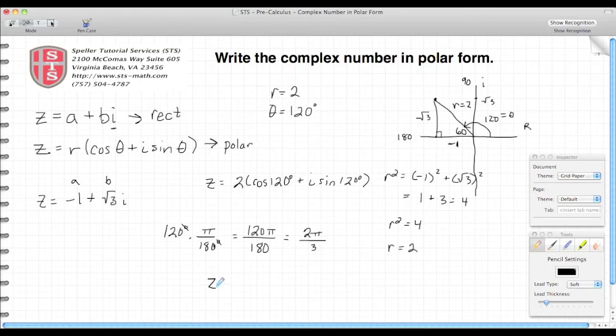So this can be rewritten as z equals 2 times cosine 2 pi over 3 plus i times sine 2 pi over 3.